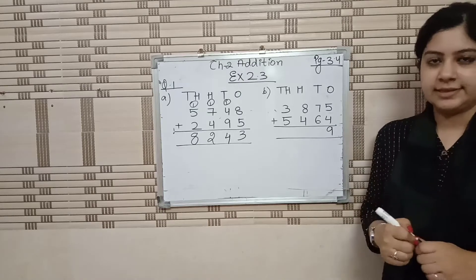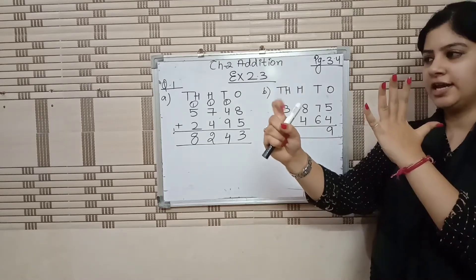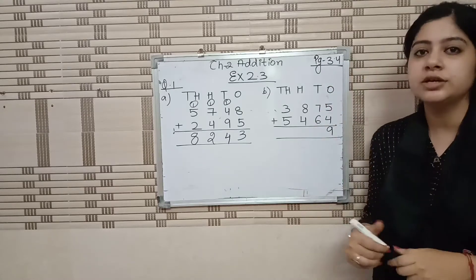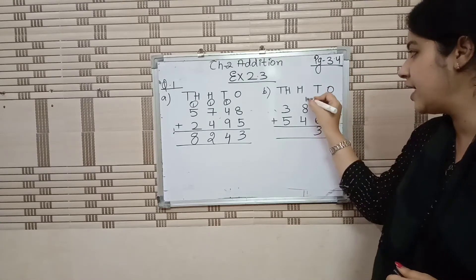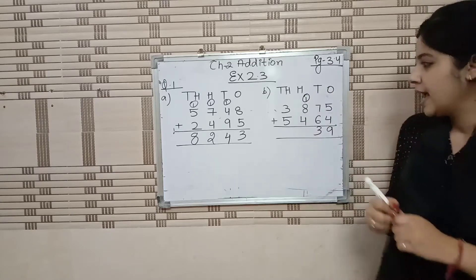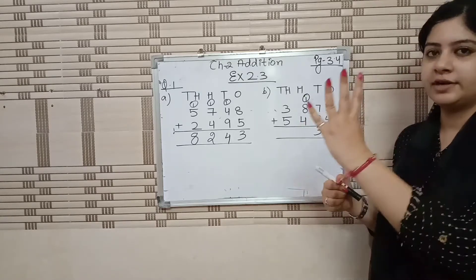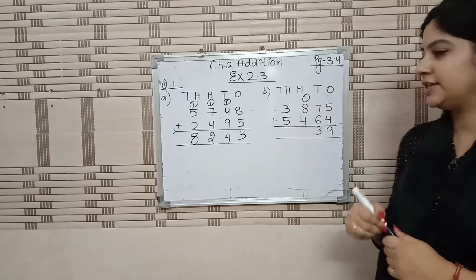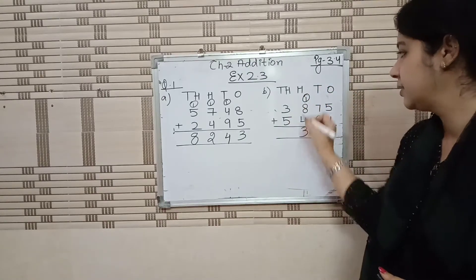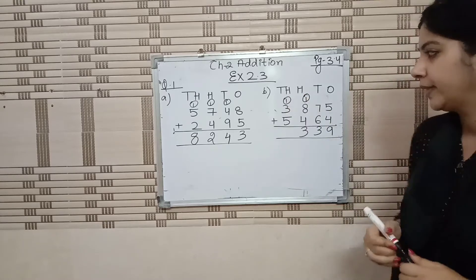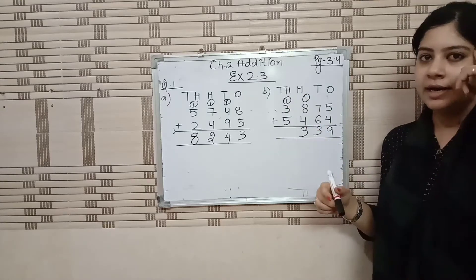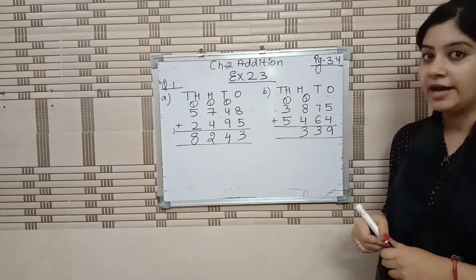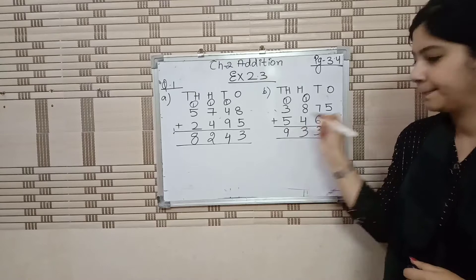Then 7 plus 6 — after 7: 8, 9, 10, 11, 12, 13. 13 is a two-digit number. So 3 over here and 1 carry forward. Add the given number — after 8: 9, 10, 11, 12. 12 plus 1 is 13. So 3 over here, 1 carry. Now 5 in our mind, 3 on our finger: 6, 7, 8 — plus 1 is 9. Clear?